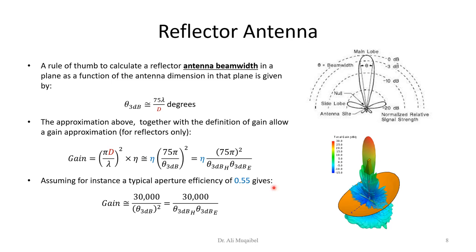Of course they are inversely related — if you have less beam width, meaning your antenna is more focused, you get higher gain. This is specific for the reflector antenna. Assuming a typical aperture efficiency of 0.5 to 0.55 and substituting, we get the relation between gain for a typical efficiency. Just give the beam width on the E-plane and H-plane and there we go — this shows how the beam width is concentrated for horn and reflector antennas.